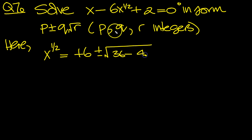Minus 4 times a, which is 1, times c, which is 2, all over 2 lots of a, which is 1.